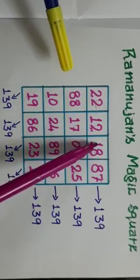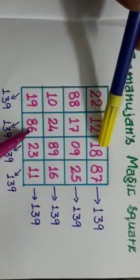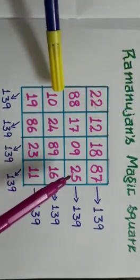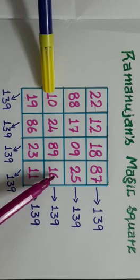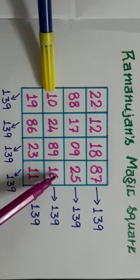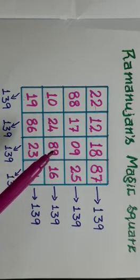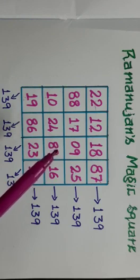When we add these two and these two numbers, we will be getting 139. Yes, these two, these two also, you will be getting 139. Really, it is magic, right? This is the Ramanujanji's magic square.